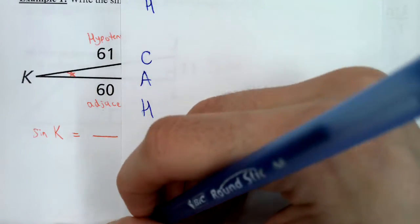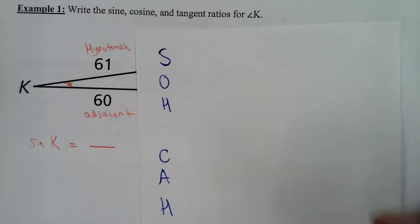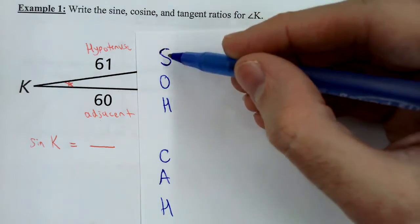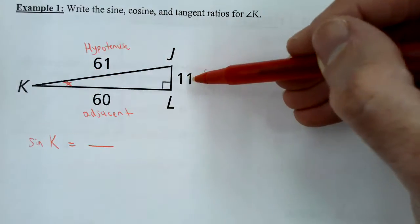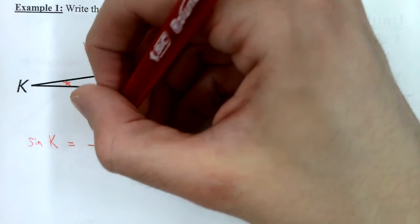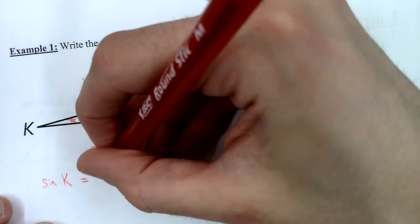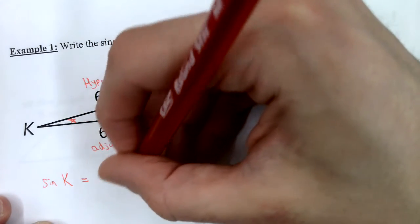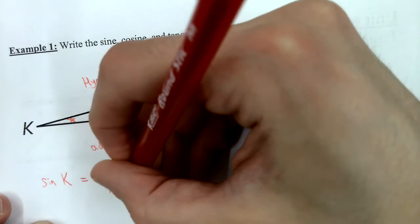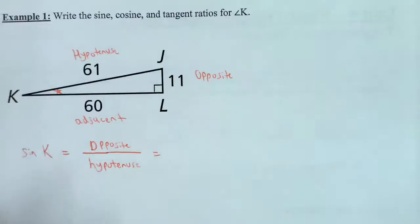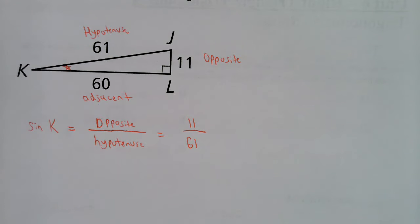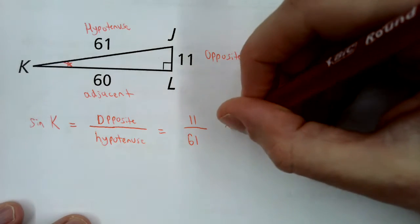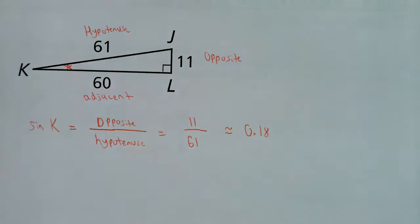Sine equals opposite over hypotenuse: opposite is 11, hypotenuse is 61, so sine of K equals 11/61. You would simplify if you could, but 11/61 cannot be simplified. As a decimal it's approximately 0.18.